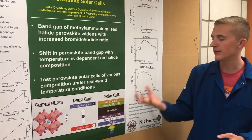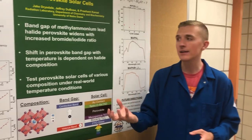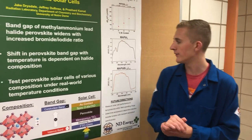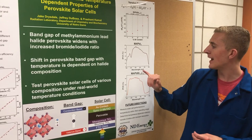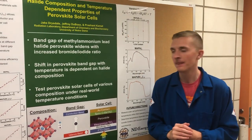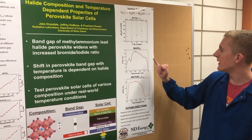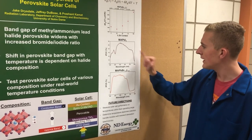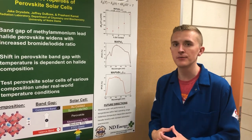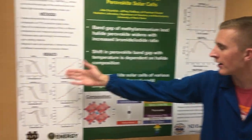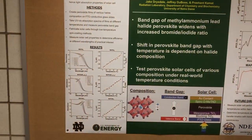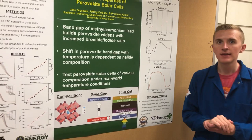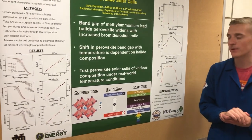With our perovskite solar cells made, we now want to measure the current response of our perovskite solar cells at different wavelengths in the solar spectrum. As you can see here, the sharp drop in current response in each of these graphs corresponds to the bandgap. The shift in this decrease corresponds to the shift in bandgap with composition.